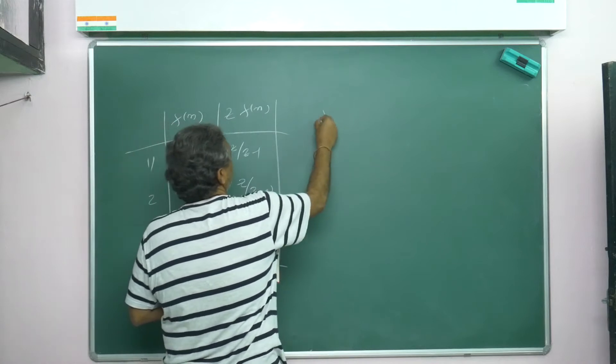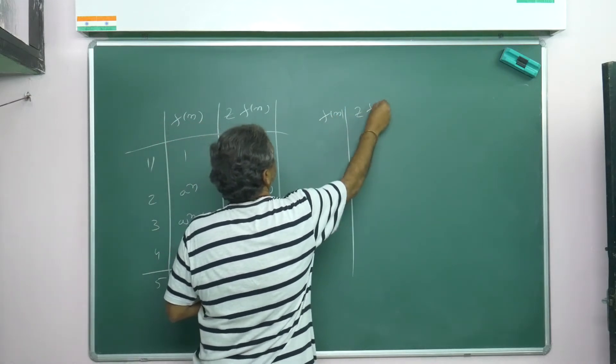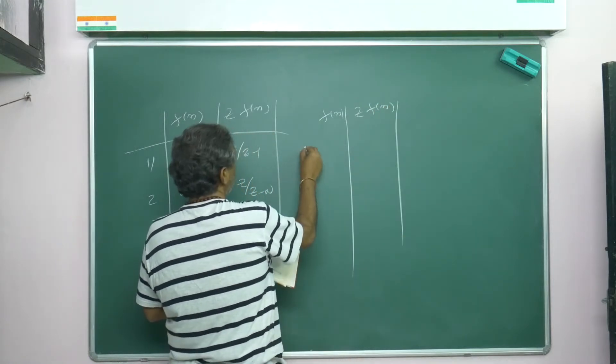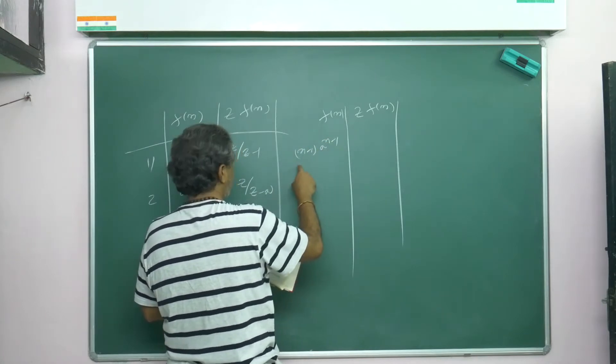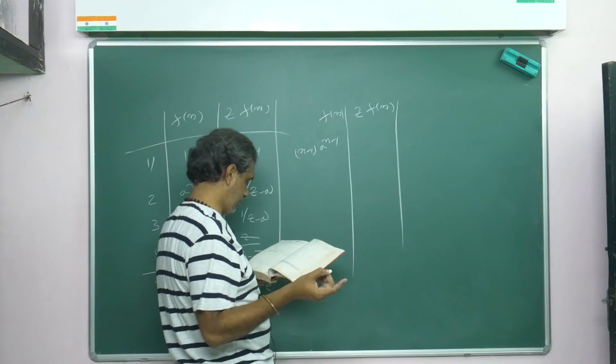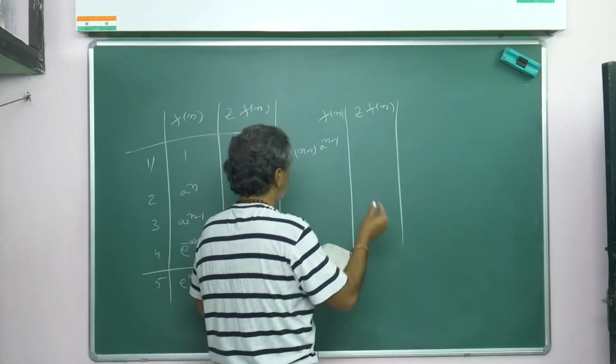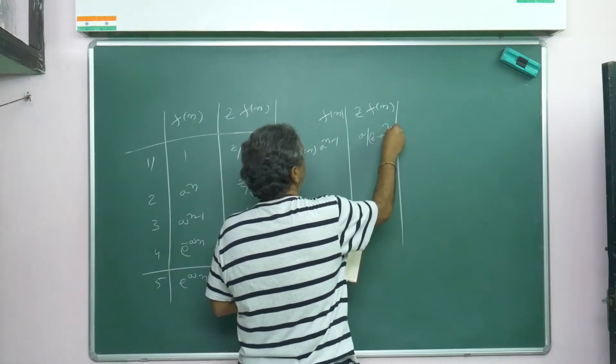Z{f(n)}, if you want we can write this: Z{(n-1)a to the power (n-1)} or (k-1)a to the power (k-1), this is what you'll get: a/(z-a) whole square. You should remember these formulas.